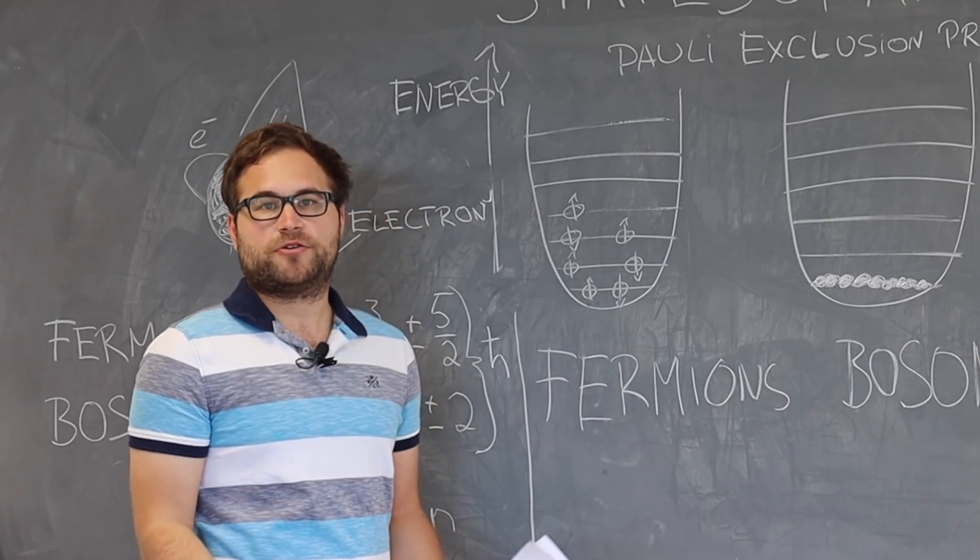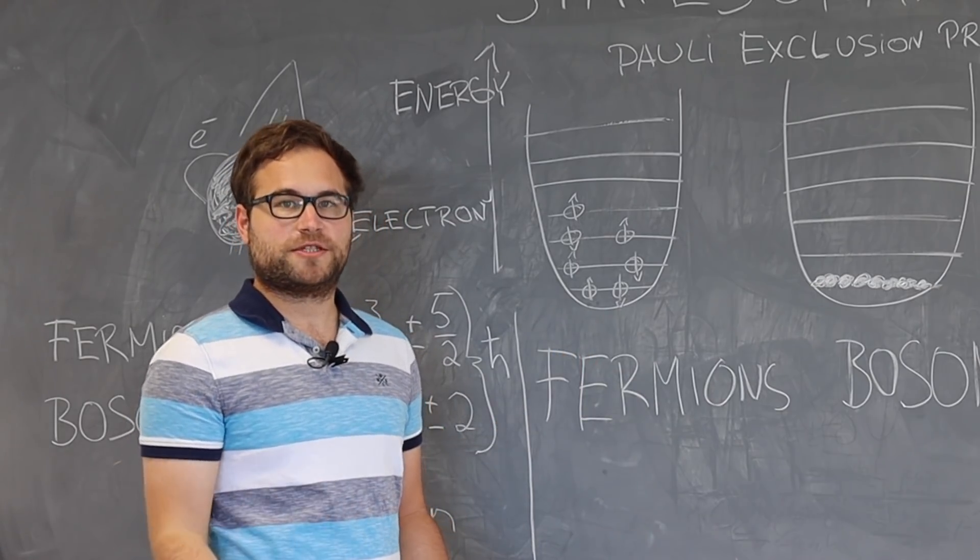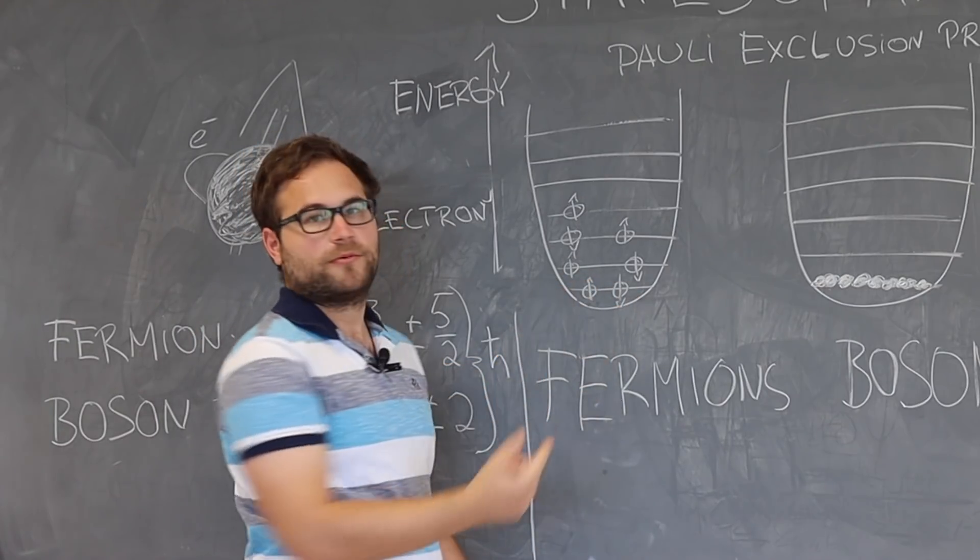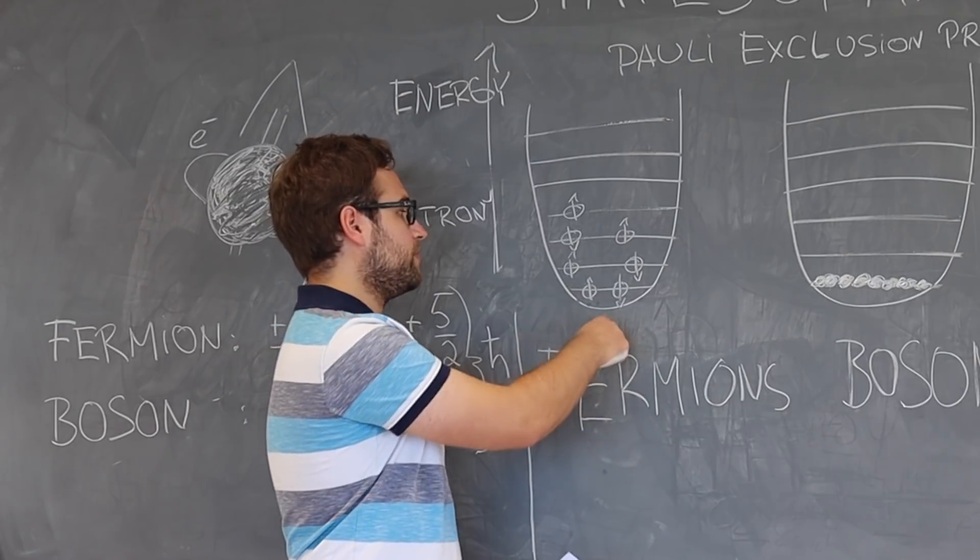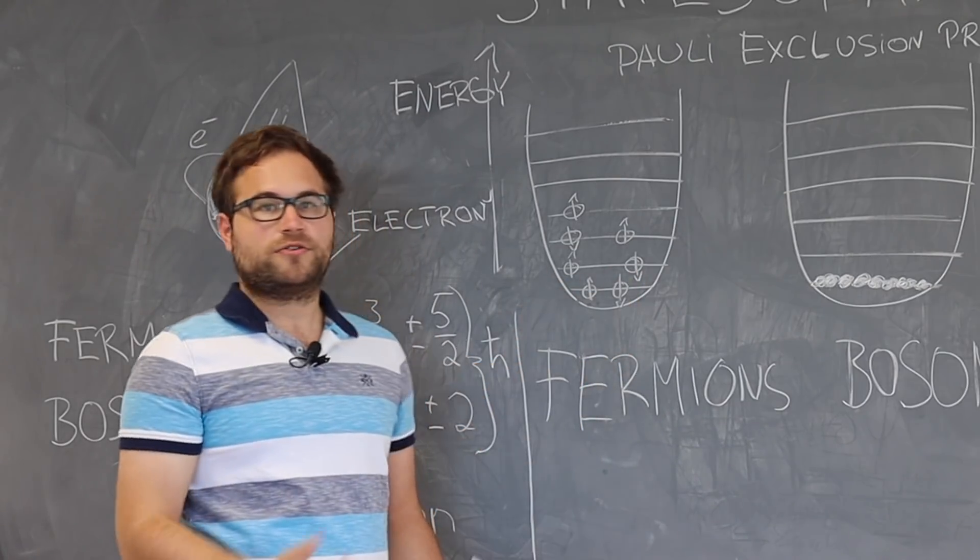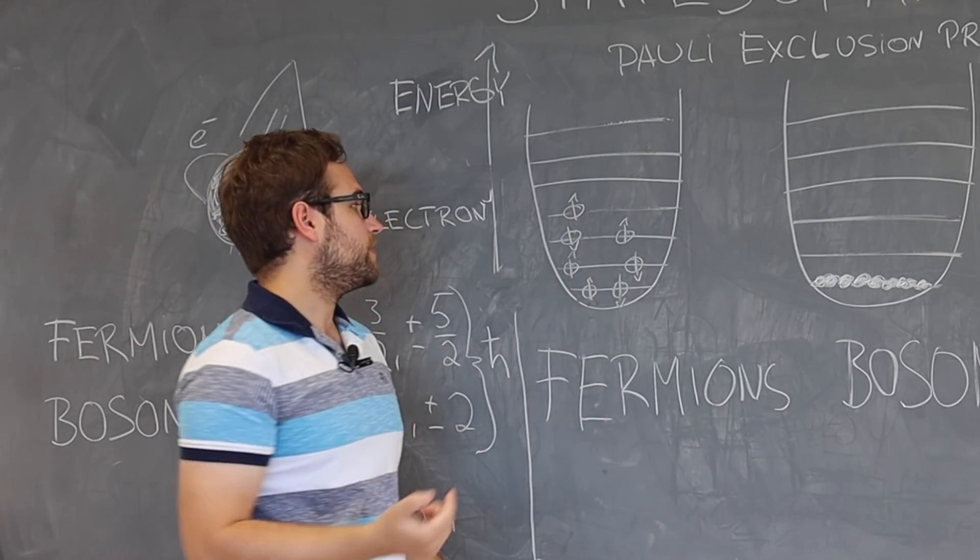This means it has to have a different spin. So if they're in the same state, one electron has to have their spin up while the other electron has to have their spin down. If we keep adding electrons, they go to higher and higher energy levels.